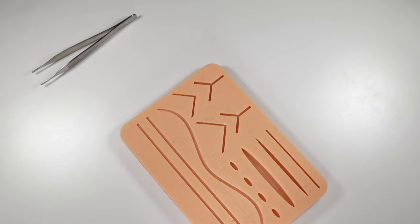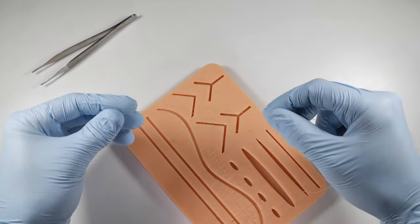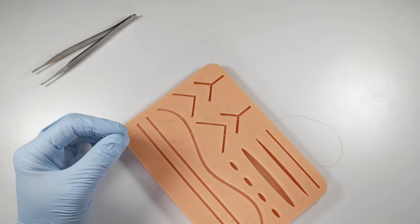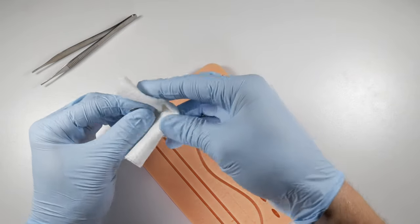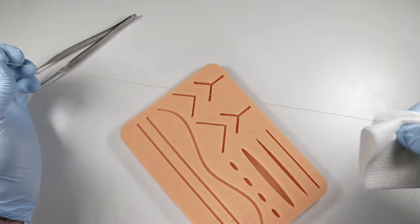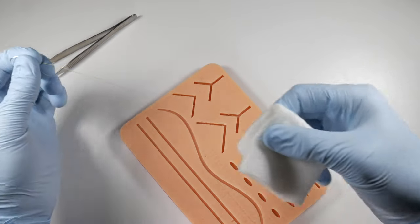When you're working with gut sutures, make sure that when you take it out of the package, you use a wet gauze. Take a gauze that's wet and run it along that suture to pull it tight and get some of the kinks out of there.